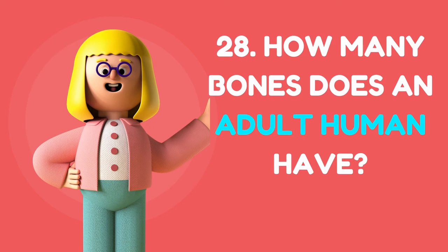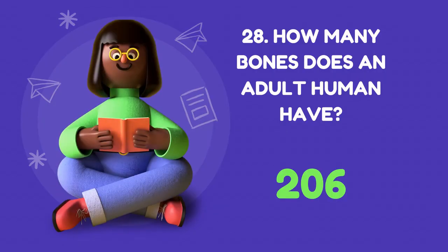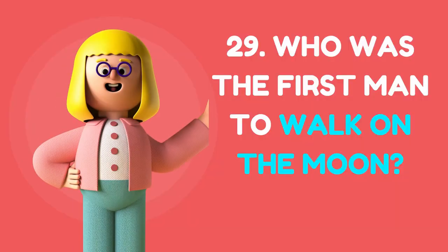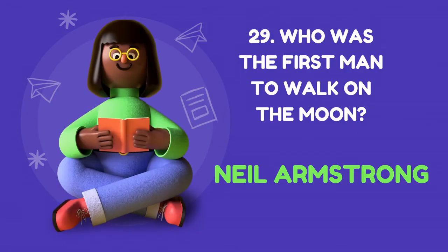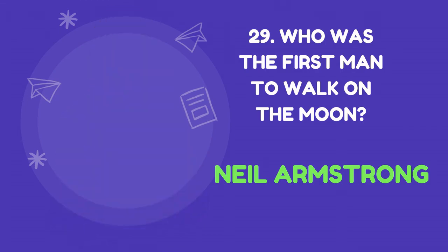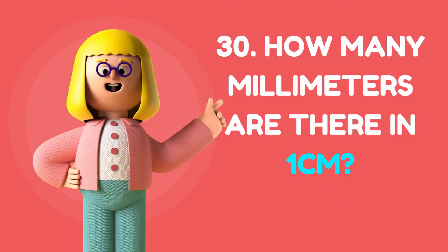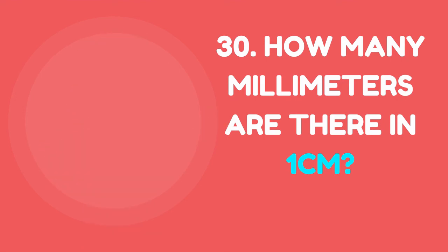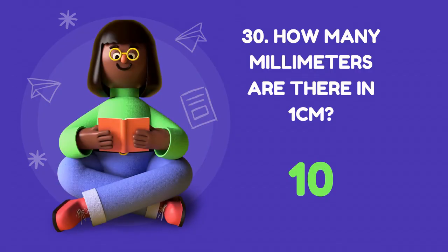How many bones does an adult human have? The answer is 206. Who was the first man to walk on the moon? The answer is Neil Armstrong. How many millimetres are there in one centimetre? The answer is 10.